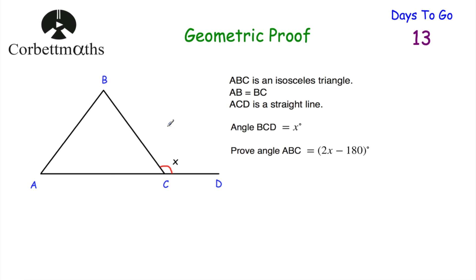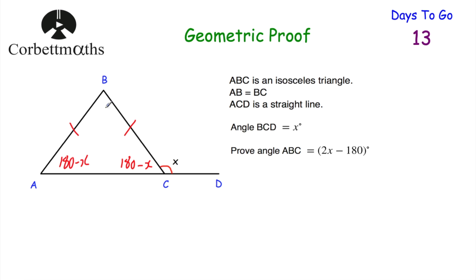With questions like this, I like to write in the angles I can on the diagram before starting the proof. It's an isosceles triangle with AB equal to BC, so there's a line of symmetry and the base angles are equal. If angle BCD is X, and ACD is a straight line, then angle ACB equals 180 minus X. And because it's isosceles, angle BAC is also 180 minus X.